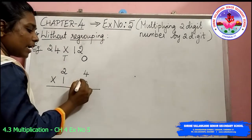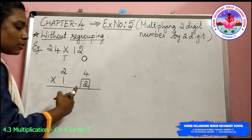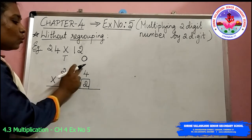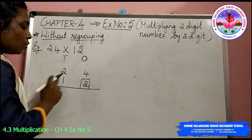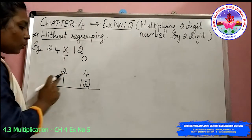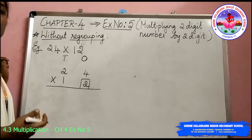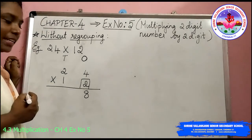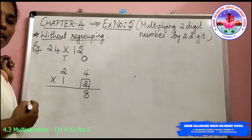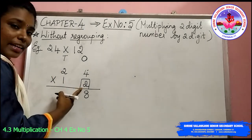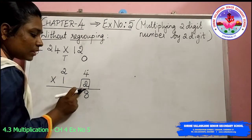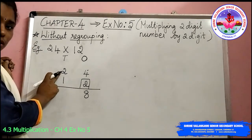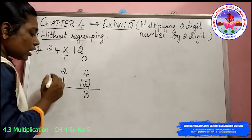First we are going to start multiplying with the ones place. In the ones place we have two. So first take the ones place and complete multiplication with the other two place values. Two into four — ones place value into ones place. Two fours are eight. Then two into two: two twos are four.